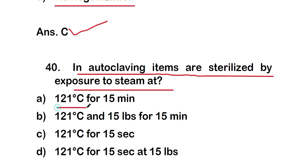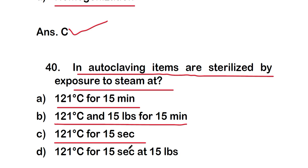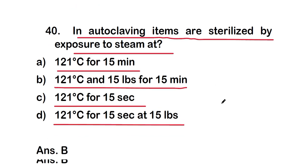The last question: in autoclaving, items are sterilized by exposure to steam at — option B — 121 degrees Celsius at 15 lbs per square inch (psi) for 15 minutes. These are all 20 questions of this part 2 video on MCQs on microbial culture media. Thank you for watching.